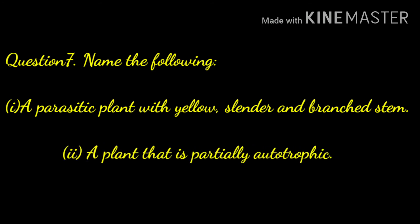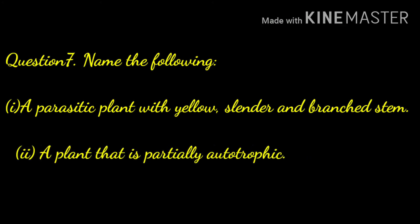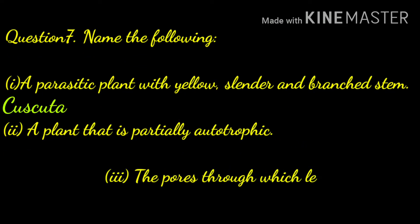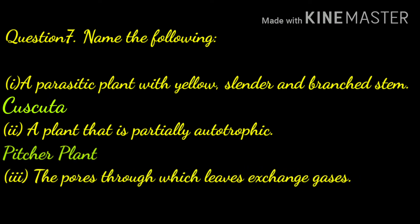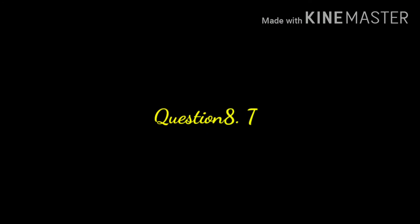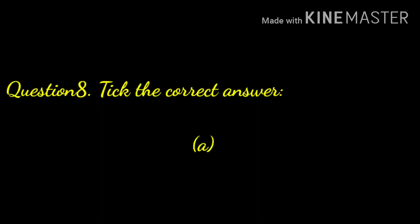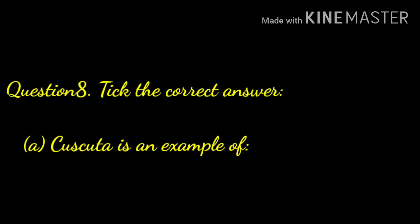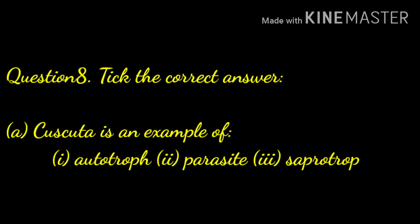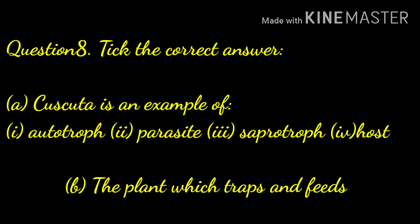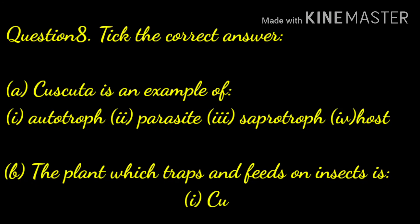Question number seven: name the following. First, a parasitic plant with yellow, slender, and branched stem — answer: Cuscuta. Second, a plant that is partially autotrophic — answer: pitcher plant. Third, the pores through which leaves exchange gases — answer: stomata.